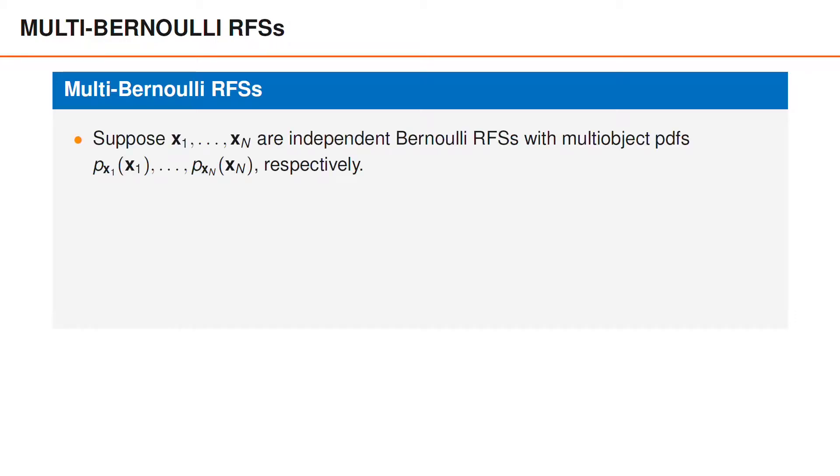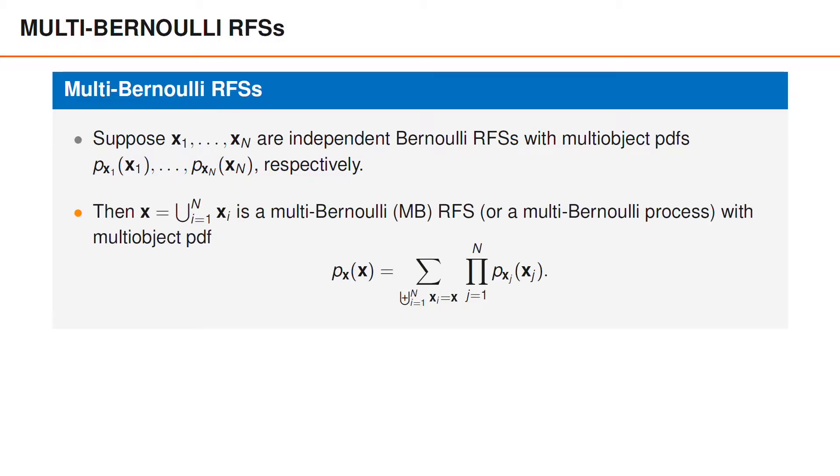Suppose x1 to xn are independent Bernoulli random finite sets with multi-object PDFs px1 to pxn respectively. Then, if we set x to be the union of the sets x1 to xn, it becomes a multi-Bernoulli random finite set.